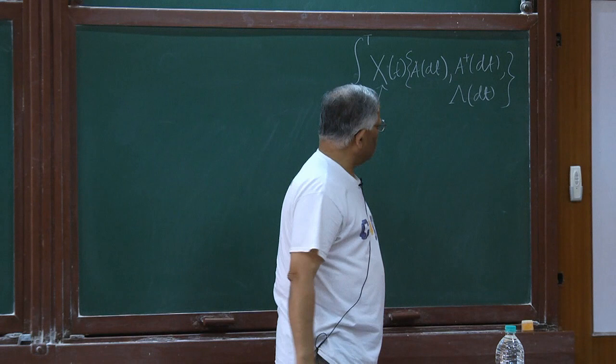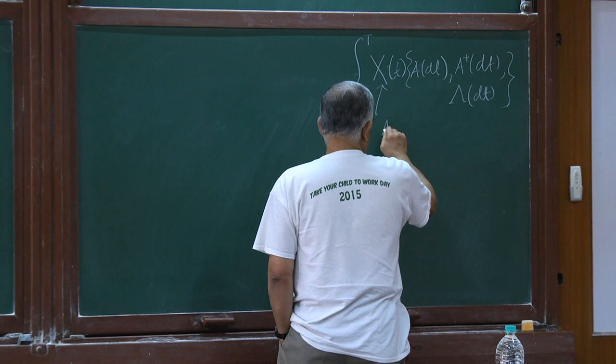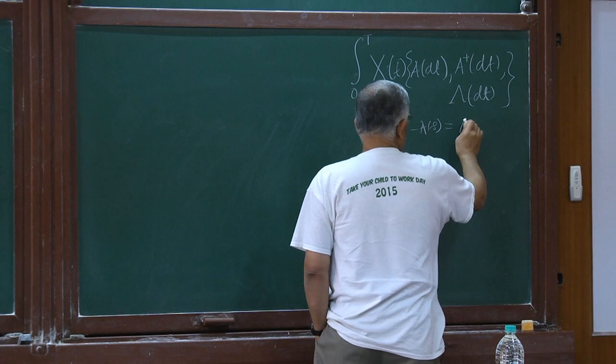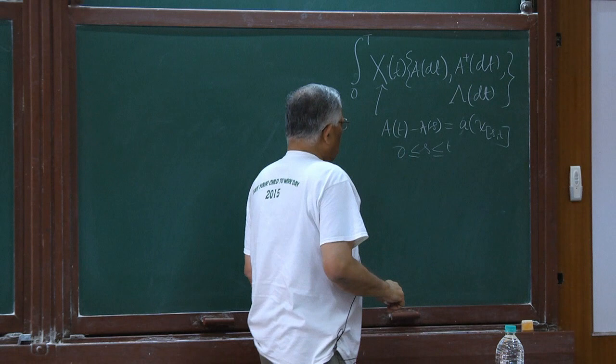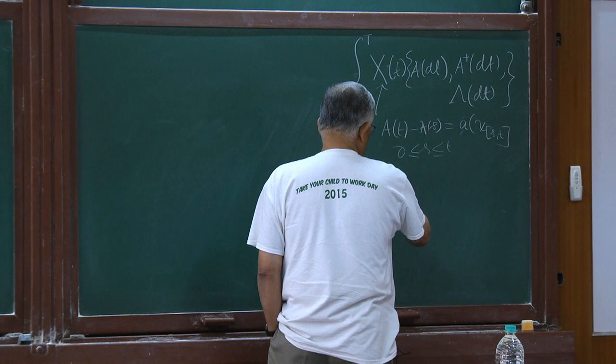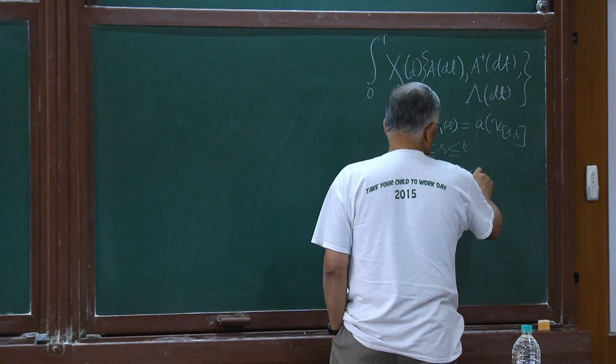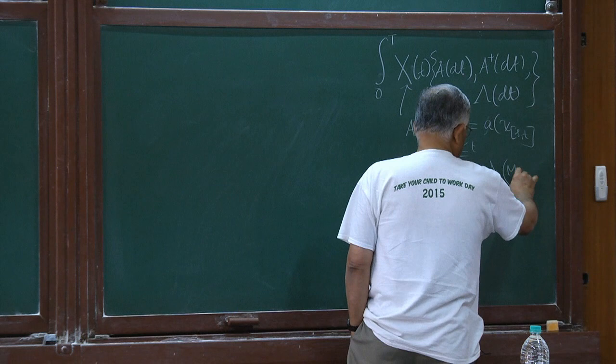To remind you again: a(t) minus a(s) is equal to a of the characteristic function of s to t. I will always take s to be less than or equal to t, greater than or equal to 0. Similarly for λ: λ(t) minus λ(s) is equal to λ of the multiplication by the characteristic function of s to t.